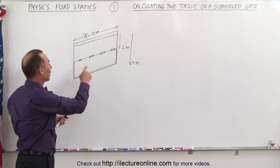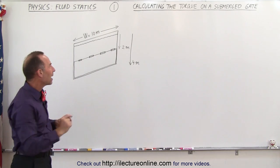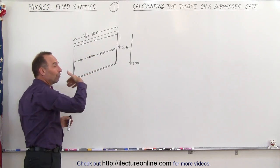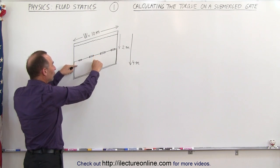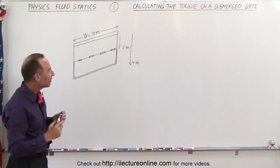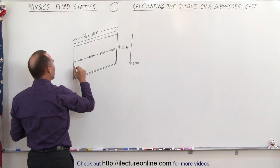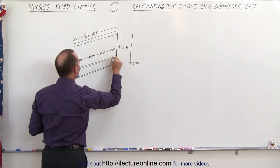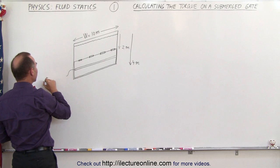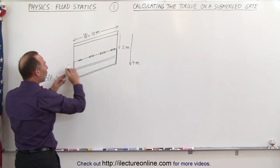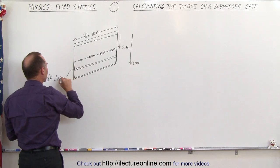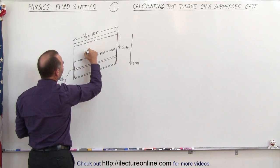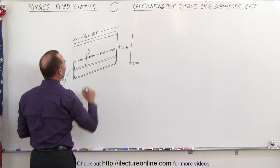So the question is: what is the torque on that gate? We have to keep in mind that the pressure increases as you go down, and of course the force acting on the gate will increase as you go further down. So the best thing to do is to draw a small area element across the gate, where the small area, let's call that dA, is equal to the width of the wall W times the height dY. The distance from the top of the water line down to that element, let's call that Y.